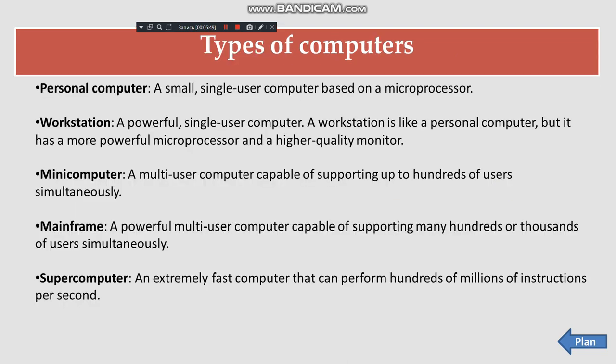Types of computers: personal computer — a small single-user computer based on a microprocessor; workstation — a powerful single-user computer with a more powerful microprocessor and higher-quality monitor; mini computer — a multi-user computer capable of supporting up to hundreds of users simultaneously; mainframe — a powerful multi-user computer capable of supporting many hundreds or thousands of users simultaneously; supercomputer — an extremely fast computer that can perform hundreds of millions of instructions per second.